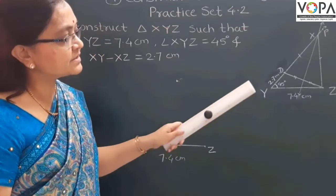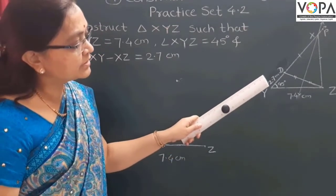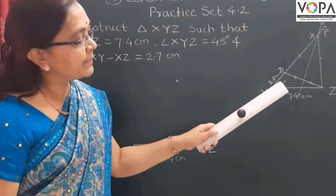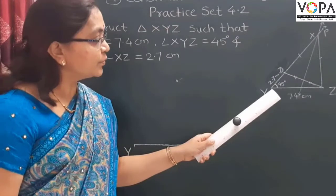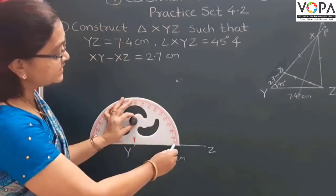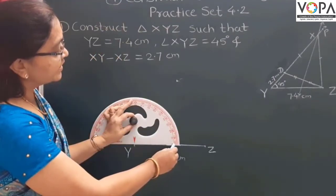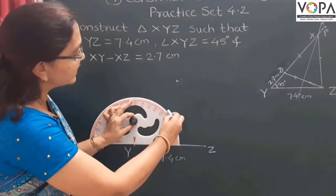Then, the second step: draw ray YP making an angle of 45 degrees with this base. Mark this angle of 45 degrees here.